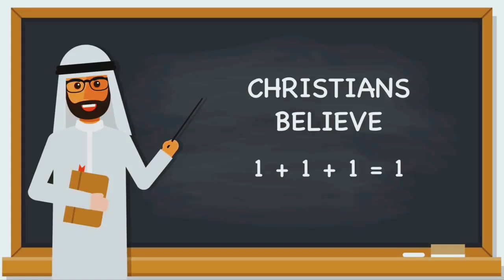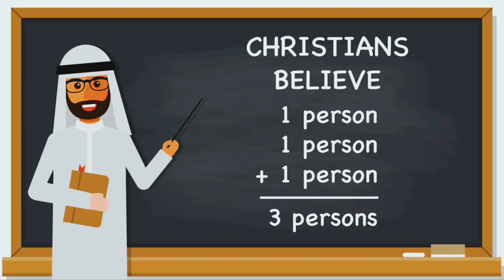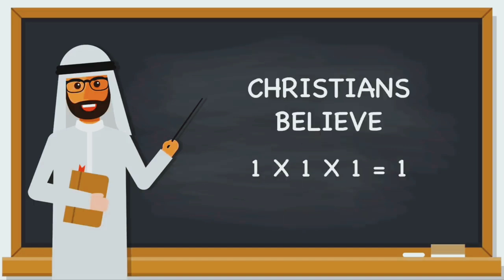This problem can be solved simply by adding units: one person plus one person plus one person equals three persons — Father, Son, and Holy Spirit. If our Muslim friends are referring to the divine nature that the three persons all share, you're probably familiar with the common response: one times one times one equals one. Or possibly, infinity plus infinity plus infinity equals infinity.